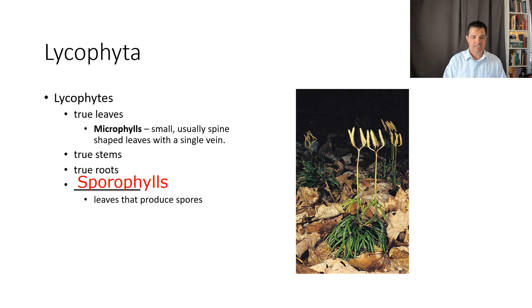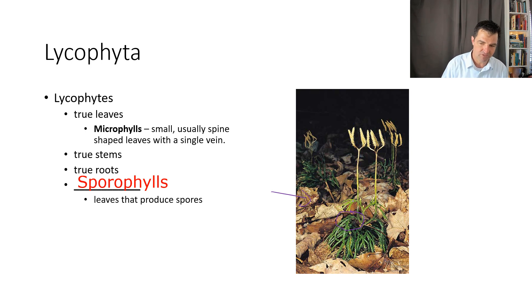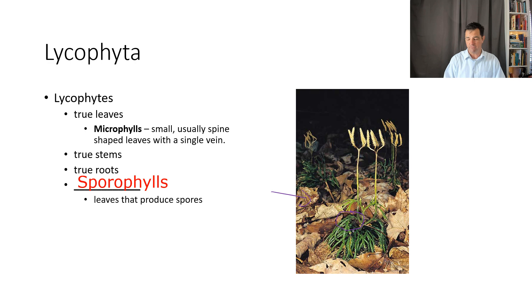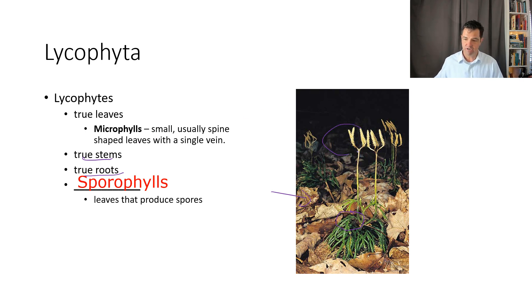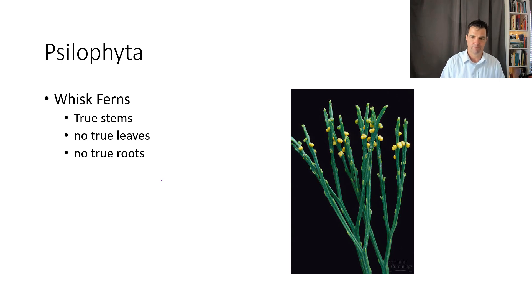Then we have the Lycophyta. The Lycophyta look like these right here — they have true leaves on them. They have microphylls, usually a spine-shaped leaf. We call these microphylls because they're kind of small and spine-like, and they have a single vein usually down the middle. But they do have true leaves because they have xylem and phloem in them. They also have true stems and true roots. And at the very top, you have sporophylls, which are specialized leaves that are used to produce spores.